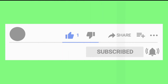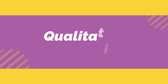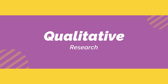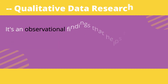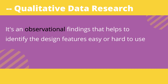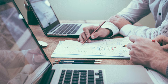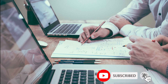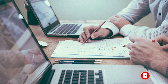Qualitative data always begins with 'why.' It consists of observational findings that identify design features which are easy or hard to use. In qualitative research, researchers always observe the users — how they are performing their tasks, whether they are doing it easily or struggling with their task. It's an observation of participants and users.